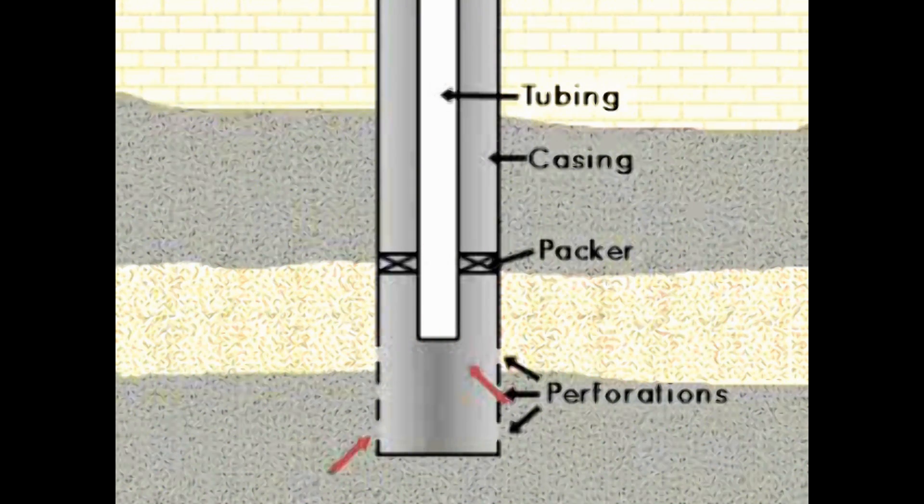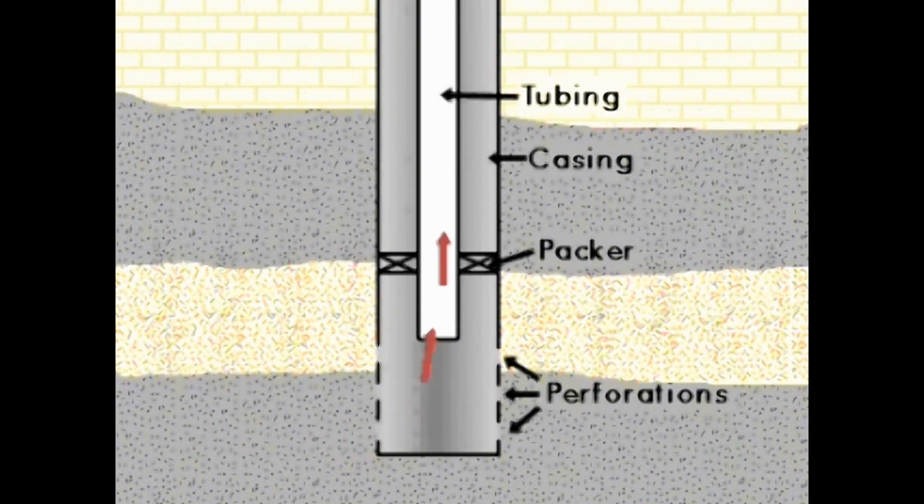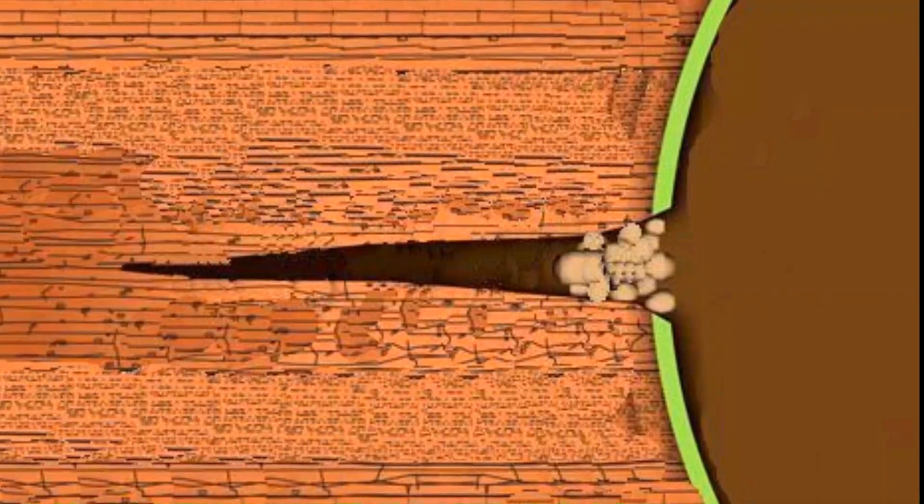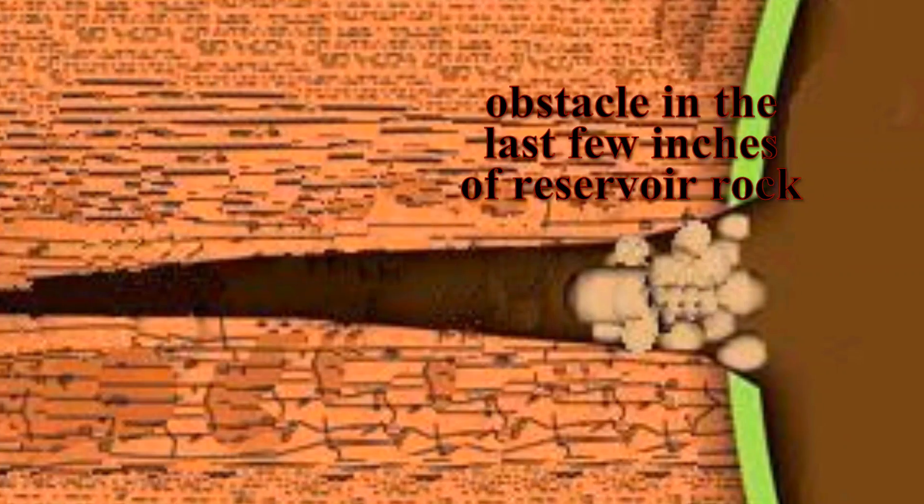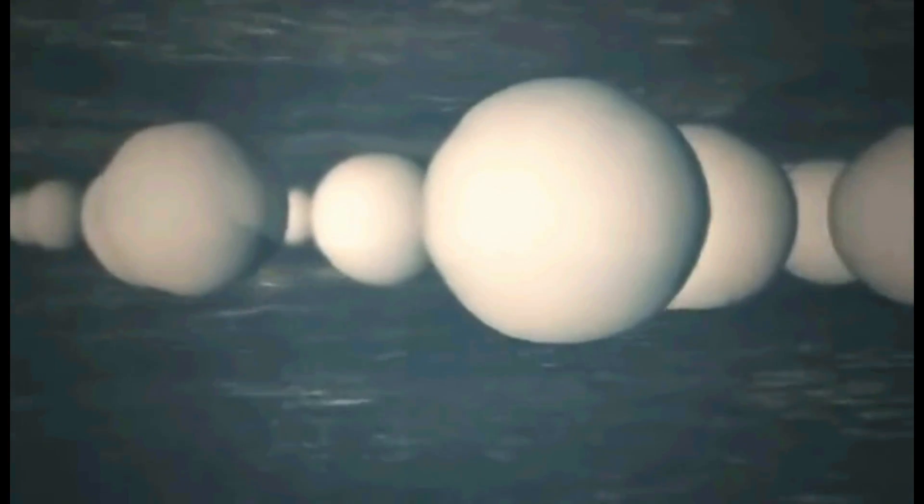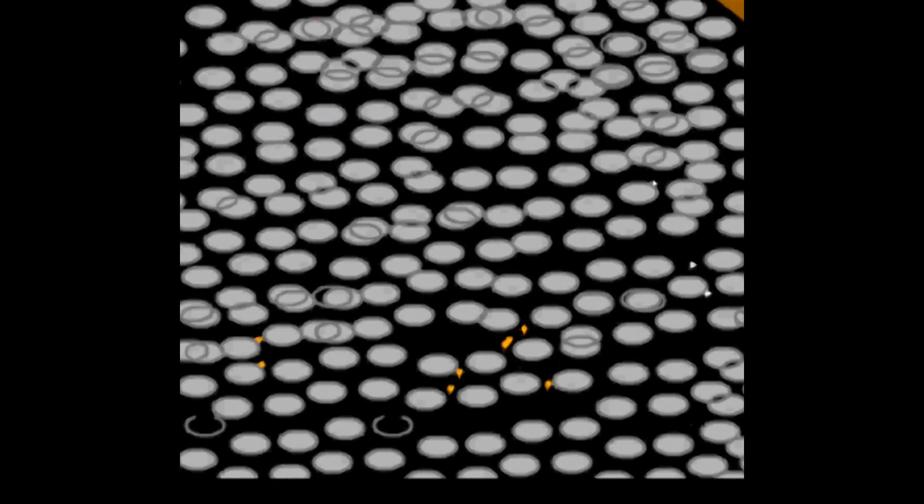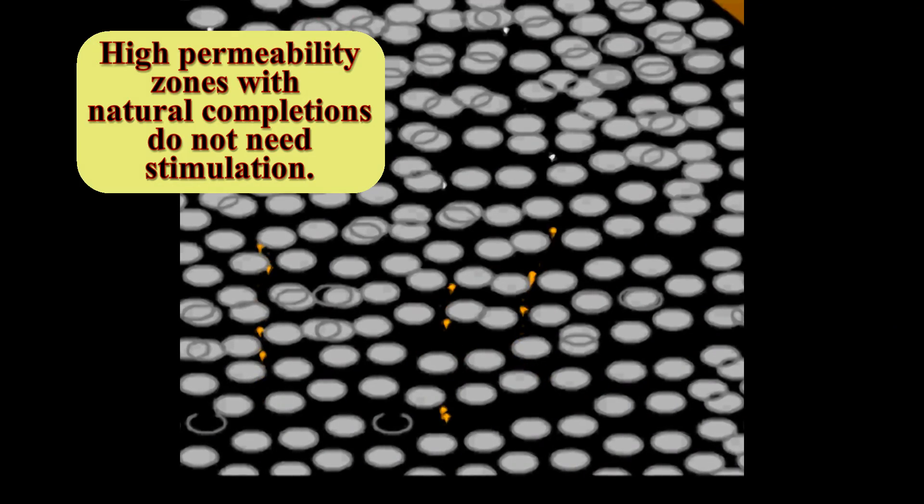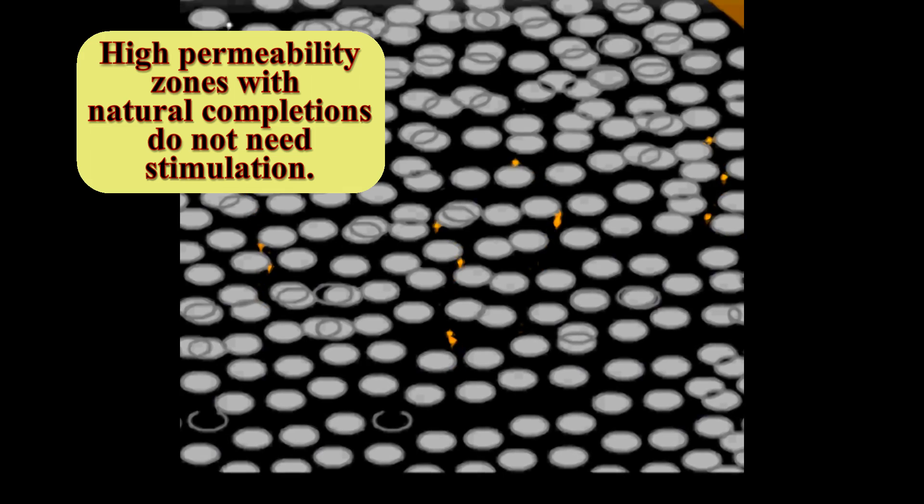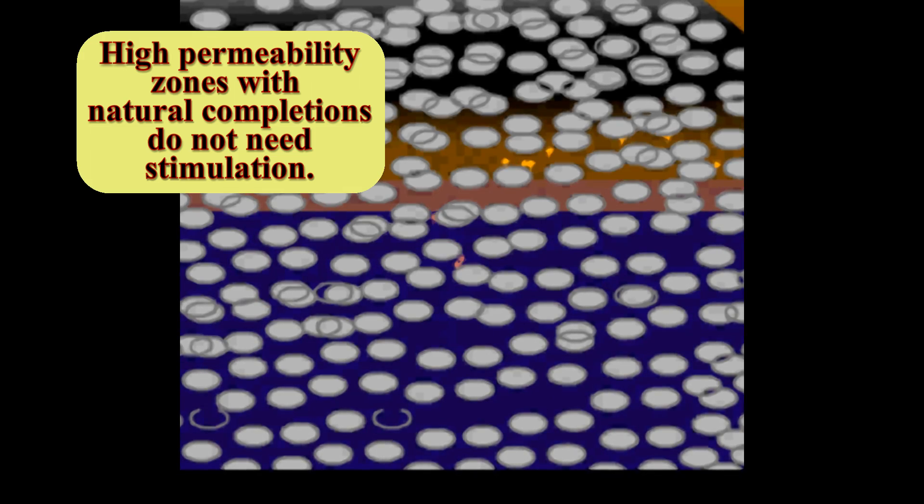Surprisingly, in the fluid's journey from the perimeters of the reservoir to the stock tank, it is the last few inches of reservoir rock where the obstacle is encountered. As I said earlier, stimulation treating operations are used in areas with low permeability. High permeability zones with natural completion do not usually need stimulation.